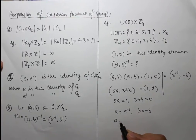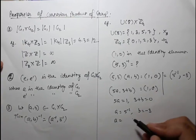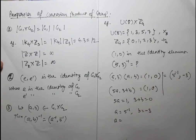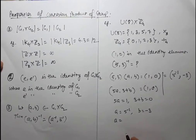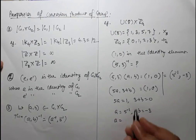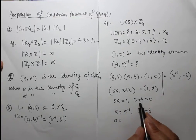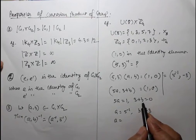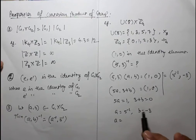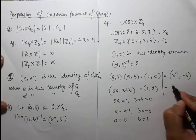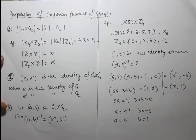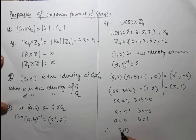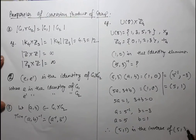To find the inverse, we know that 5 inverse under U8 is 5, since 5 times 5 equals 25, and 25 divided by 8 leaves remainder 1. For the second component, we need b such that 3 plus b equals 0 modulo 4, so b equals 1. Therefore, (5, 1) is the inverse of (5, 3).